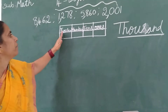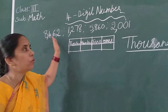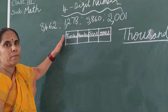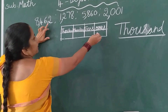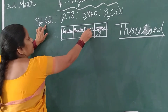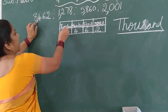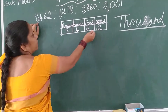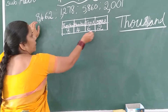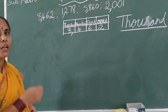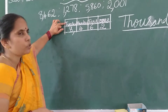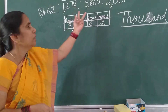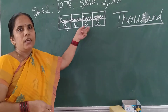Now I will write one number in the chart so you can easily read all the numbers. While writing in maths, you start from the 1s place. Here which digit is there? 2. Next is 6. Next is 4. And next is 8. Where will you put the comma? After 3 digits: 1s place, 10s place, 100s place — after those 3 digits, put the comma. Now we will read this number: 8,462.